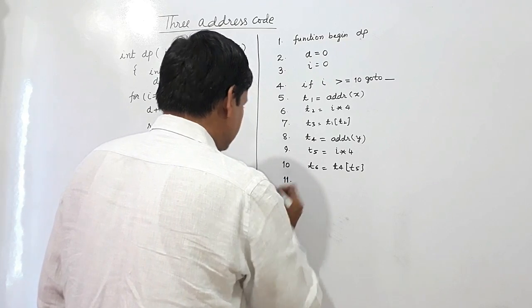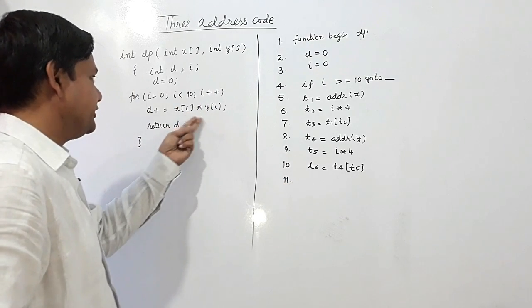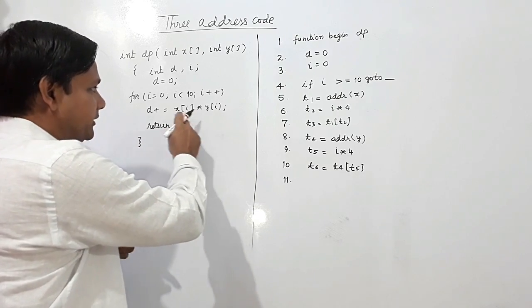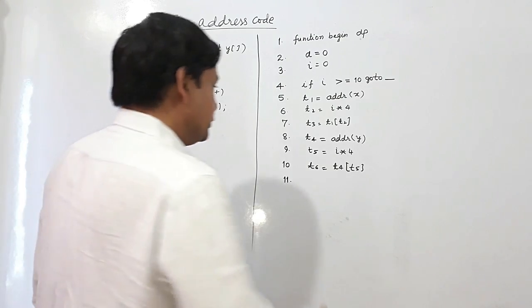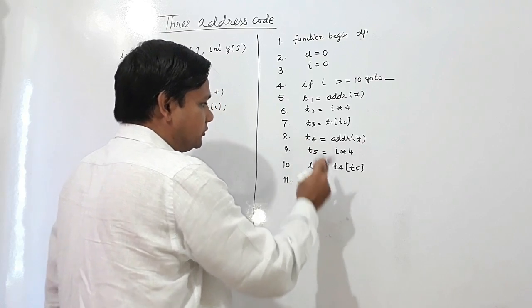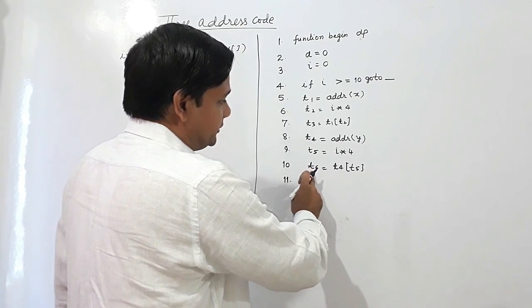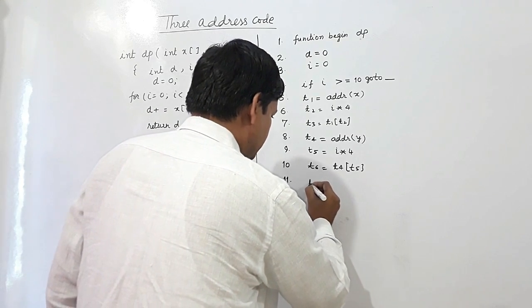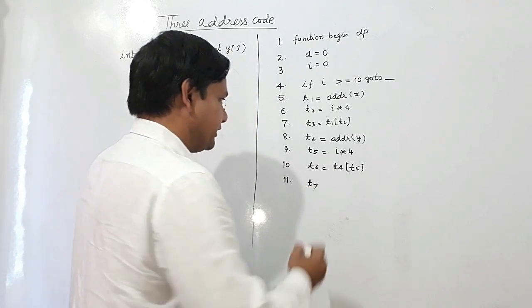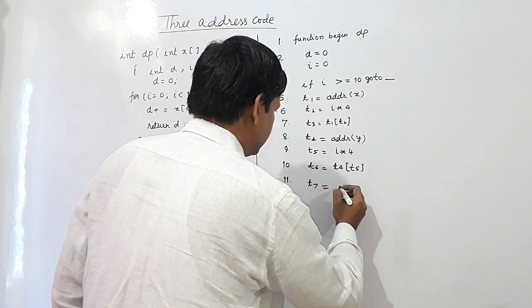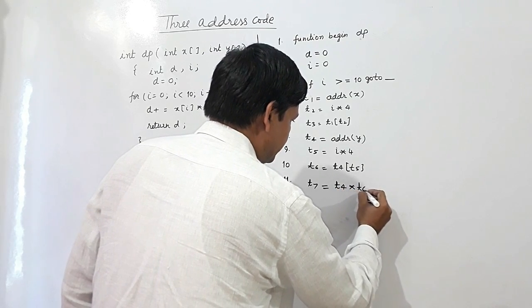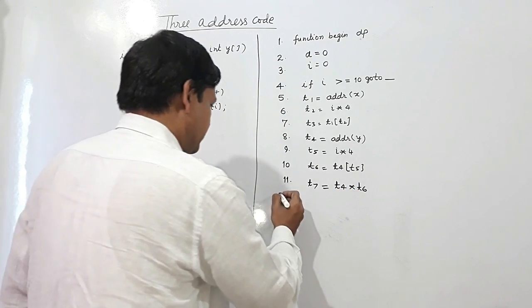Number 11, we are multiplying these x[i] and y[i]. So x[i] is in t3 and y[i] is t6 here. So one more temporary variable t7 is here which is being assigned by t3 into t6.